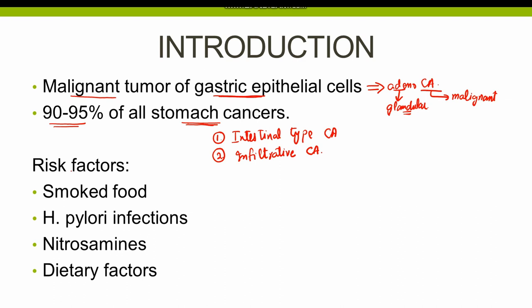The risk factors of gastric adenocarcinoma include smoked food. H. pylori infections typically increase the risk of intestinal type adenocarcinoma, whereas H. pylori does not increase the risk of infiltrative carcinoma. Moreover, nitrosamines and certain dietary factors also result in gastric carcinoma. The dietary factors include lack of antioxidants such as vitamin C and citrus fruits, and also the lack of dietary fibers.